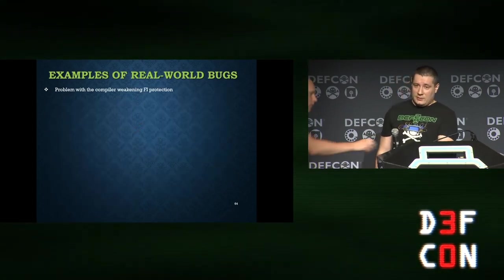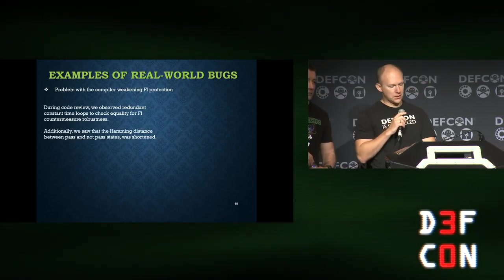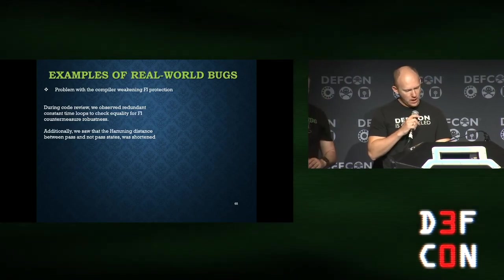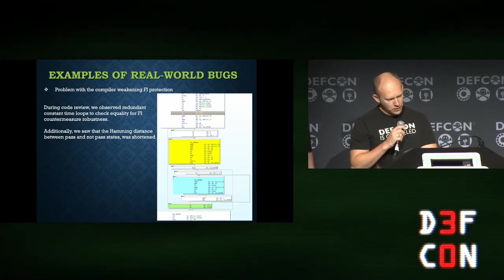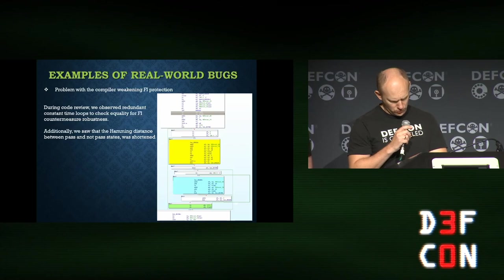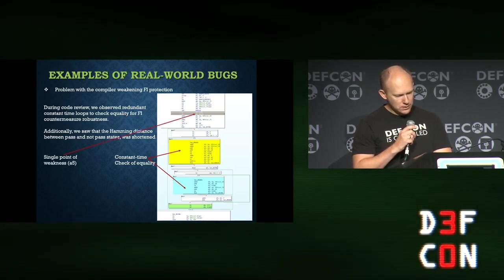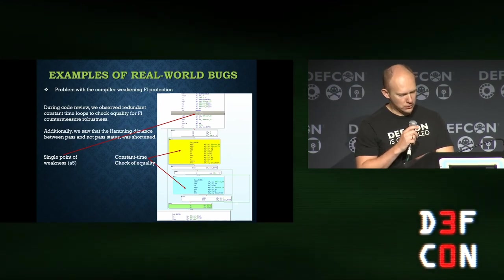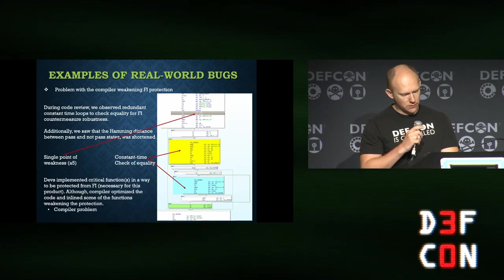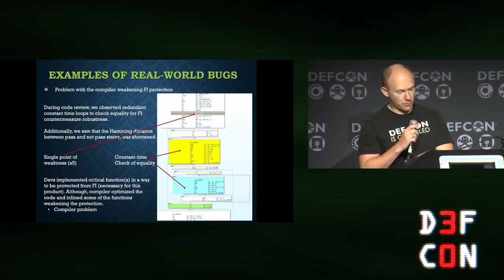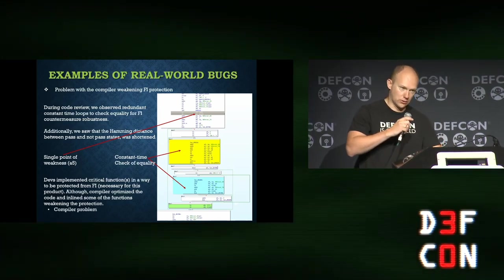One project had fault injection protection in scope — the code must incorporate mitigations against fault injection. We saw a disassembly where the memory compare function was implemented in constant time, which is protected. But at the same time, we saw a single point of weakness — definitely bad for fault injection protection. Analyzing the source code, developers had implemented everything correctly, but the compiler optimized out certain functions, weakening the protection. You can only see this in the binary — so you must analyze not just source code but the compiled binary as well.